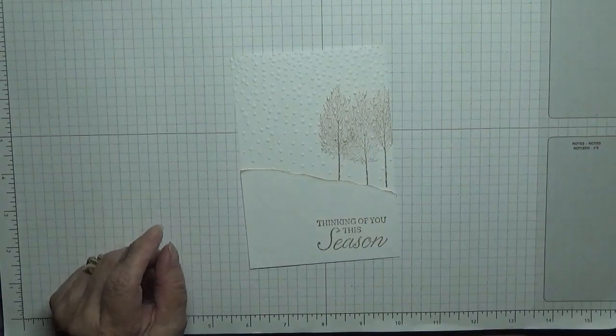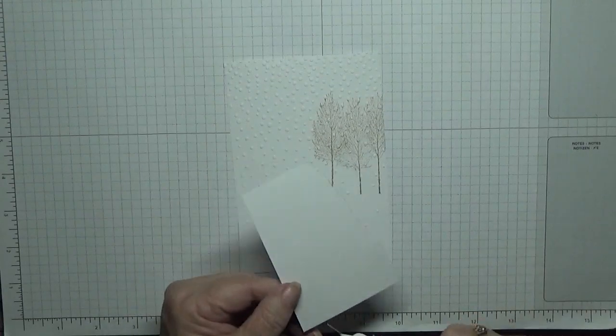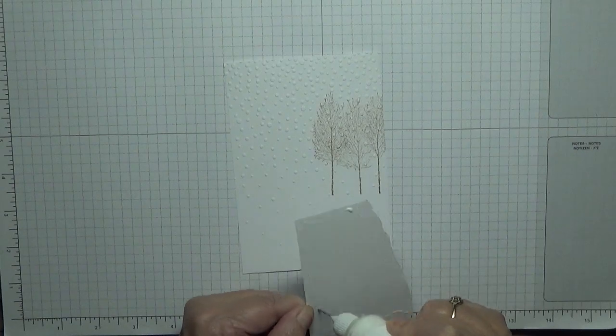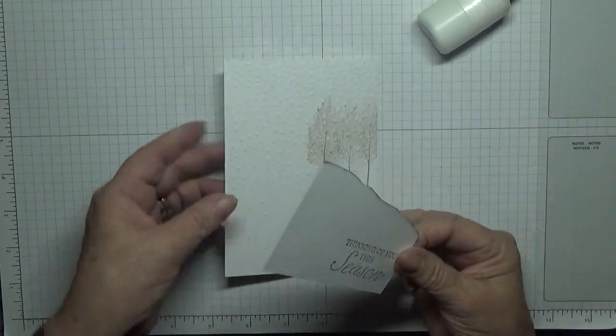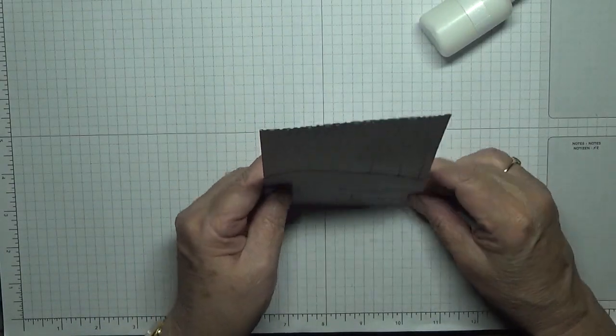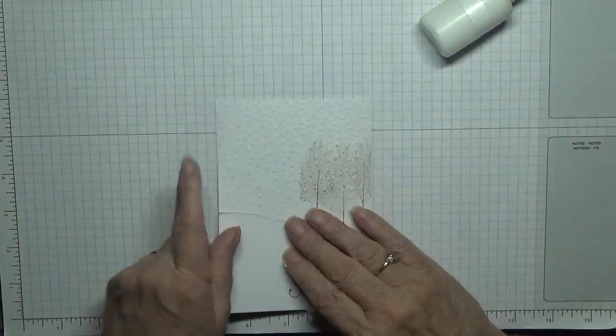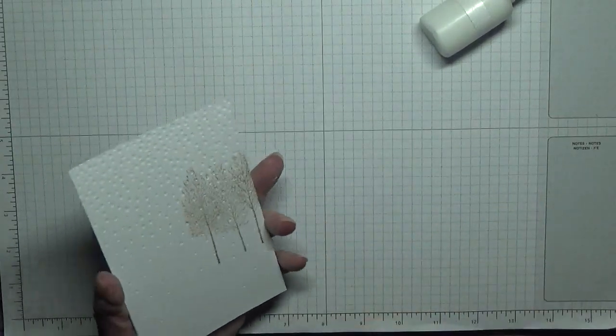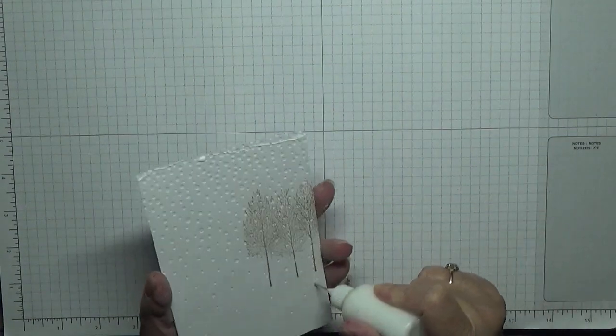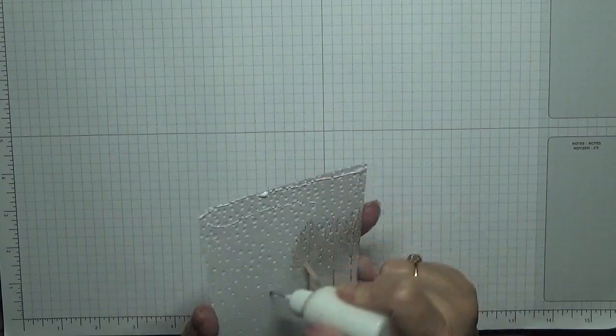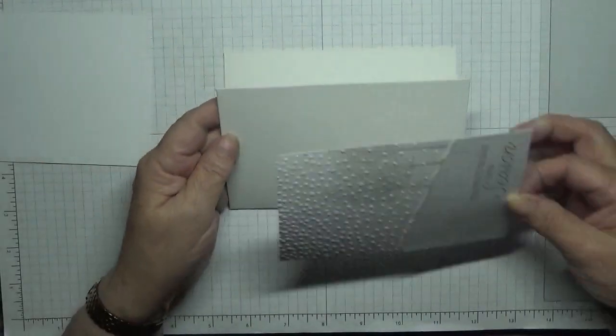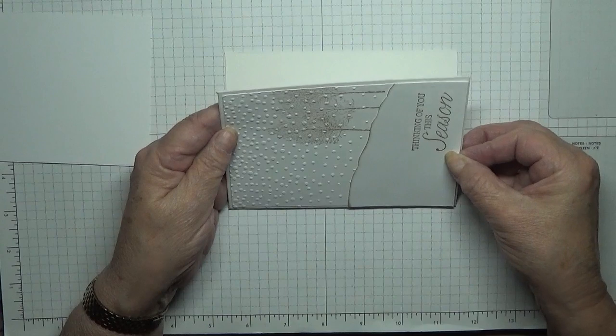And make sure it hits the bottom and the edges. No overhang. And then we're going to glue this onto our card base. Like that.